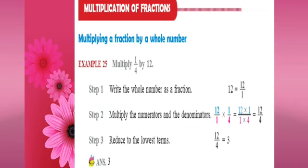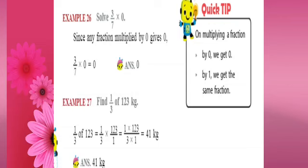Now multiply 12 by 1 multiplied by 1 by 4. Multiply the numerator and the denominator: 12 into 1 by 1 into 4 is equal to 12 by 4. Since 12 by 4 is an improper fraction, reduce to its lowest term. When you divide 12 by 4 you get 3 as the answer.